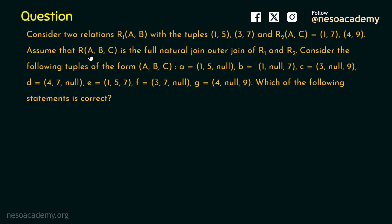Assume that relation R which contains attributes A, B, and C is the full natural outer join of R1 and R2.